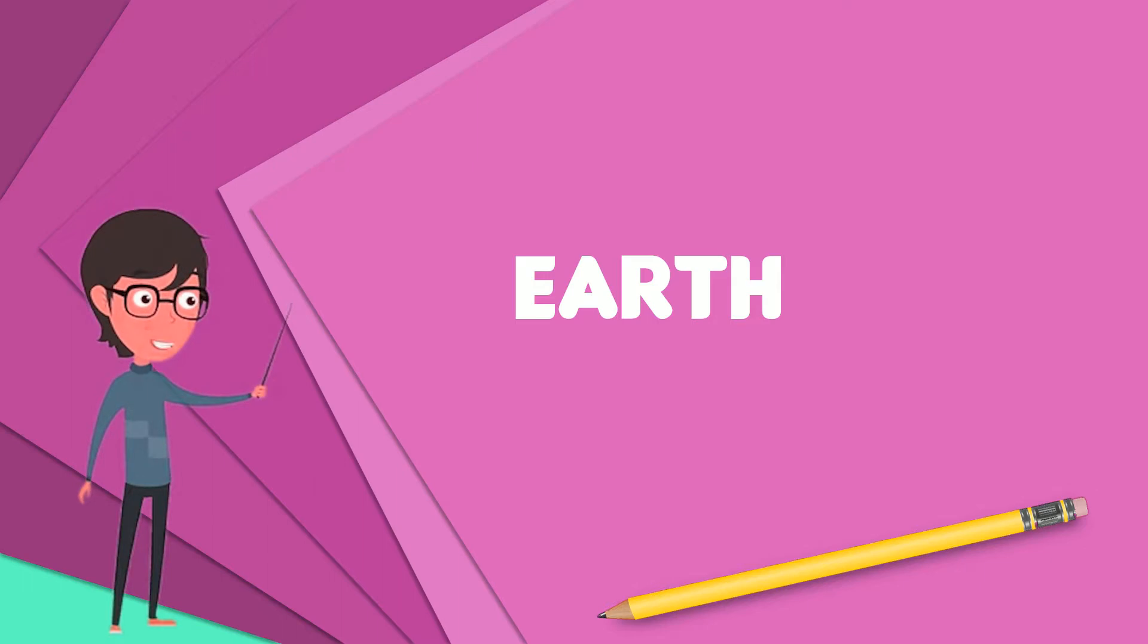Earth is the densest planet in the solar system and the largest of the four terrestrial planets. Earth's lithosphere is divided into several rigid tectonic plates that migrate across the surface over periods of many millions of years.